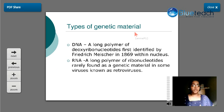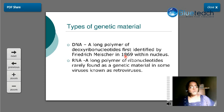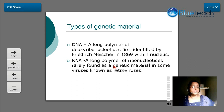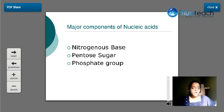There are two fundamental types of genetic material: DNA and RNA. DNA is a long polymer of deoxyribonucleotides, first identified by Frederick Miescher in 1869 within the nucleus. RNA is a long polymer of ribonucleotides. RNA is rarely found as genetic material — it is generally found in some viruses known as retroviruses. All higher organisms contain genetic material in the form of DNA, whereas some viruses, typically retroviruses, have RNA as their genetic material.